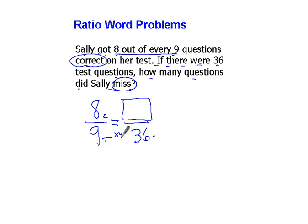Nine times four is 36, eight times four is 32, but notice that this is 32 correct and the question says how many did she miss?